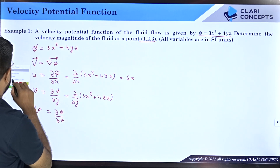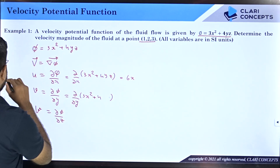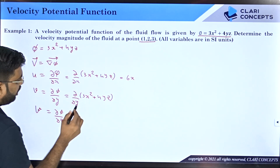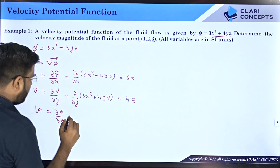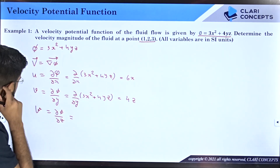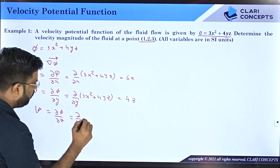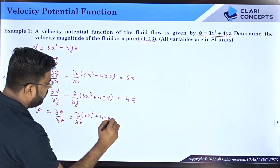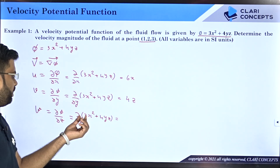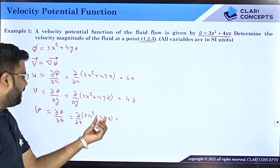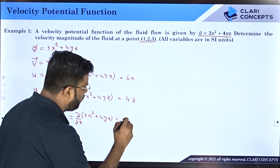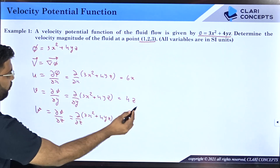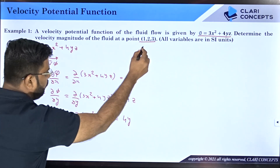Now for v = ∂φ/∂y of (3x² + 4yz): the derivative of 3x² with respect to y is 0, and the derivative of 4yz with respect to y is 4z. So v = 4z. And for w = ∂φ/∂z of (3x² + 4yz): the derivative of 4yz with respect to z is 4y. So w = 4y.